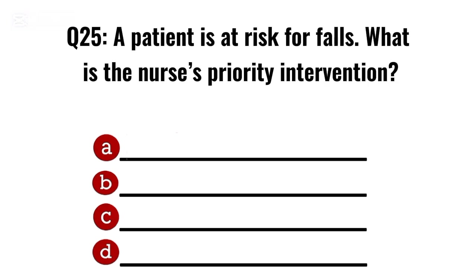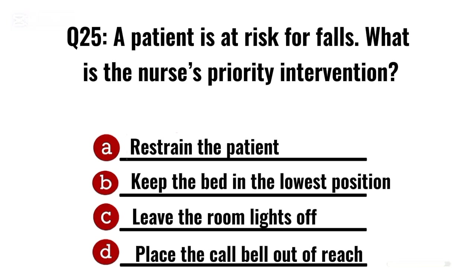Question 25. A patient is at risk for falls. What is the nurse's priority intervention? Correct option B: Keep the bed in the lowest position.